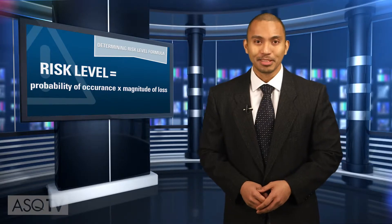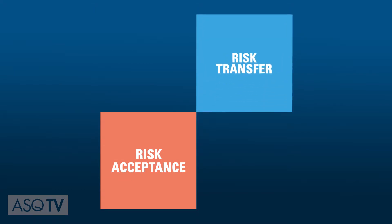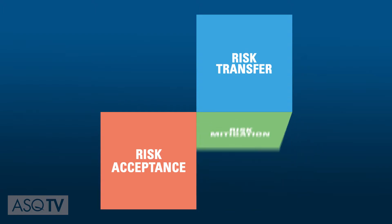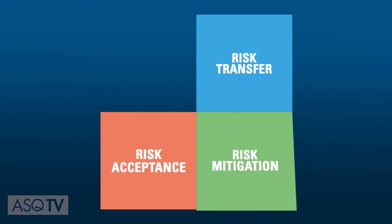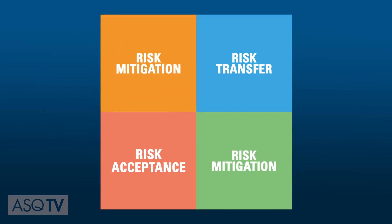The risk quadrant can help. Accepting risk is often the best strategy for organizations with low risk and low uncertainty. Organizations can avoid risk entirely or transfer risk to a third-party insurance provider or supplier. Organizations with high risk and low uncertainty can mitigate risk through preventive measures. Risk mitigation and preventive measures also apply to companies with low risk and high uncertainty.